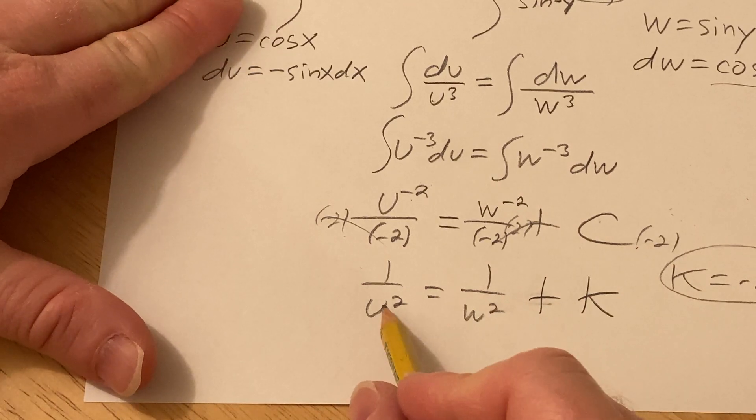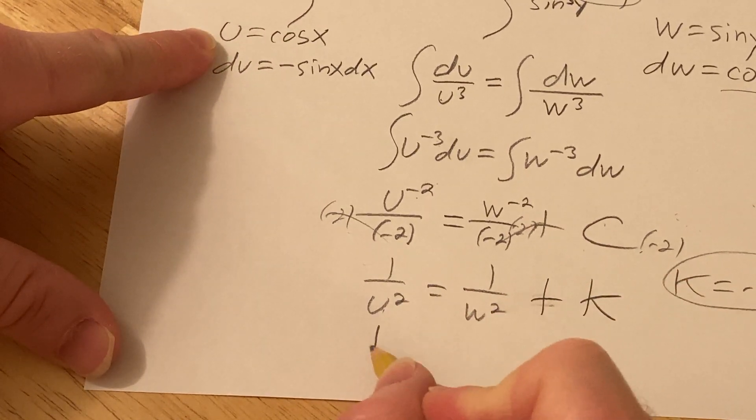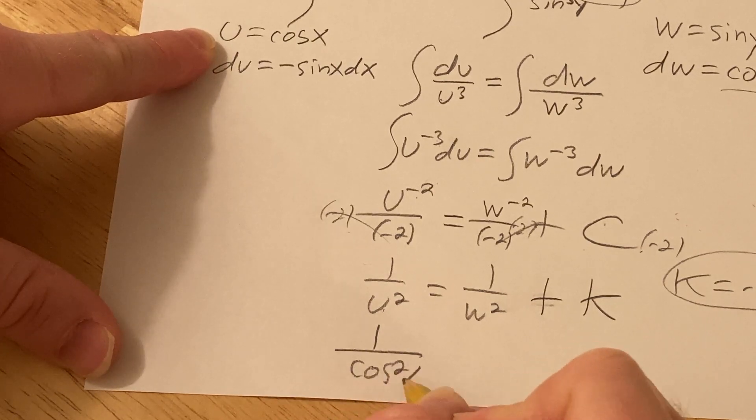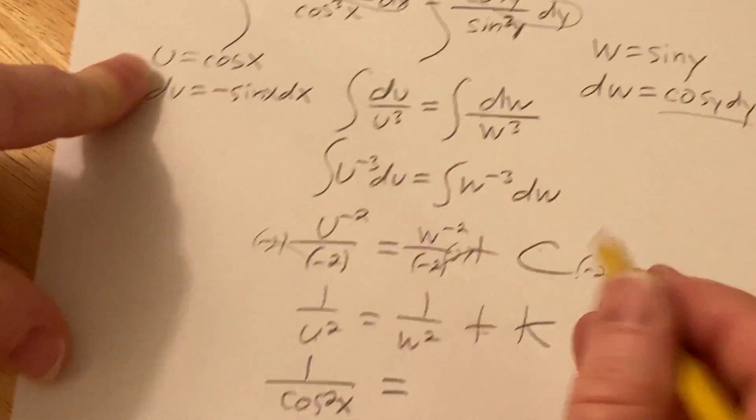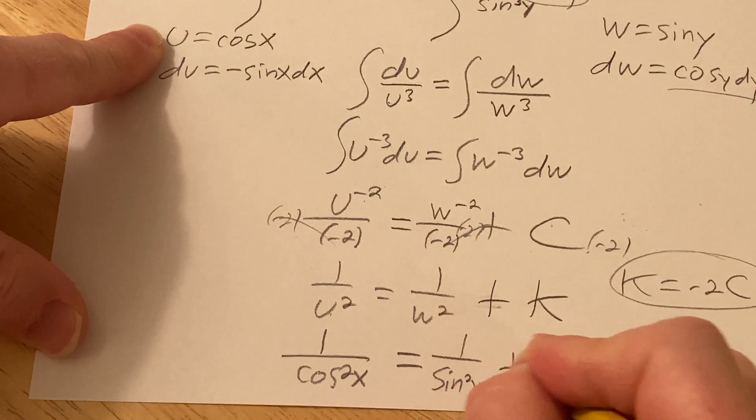And then u is cosine, so this will be 1 over cosine squared x equals, and then w is sine, so 1 over sine squared y plus k.